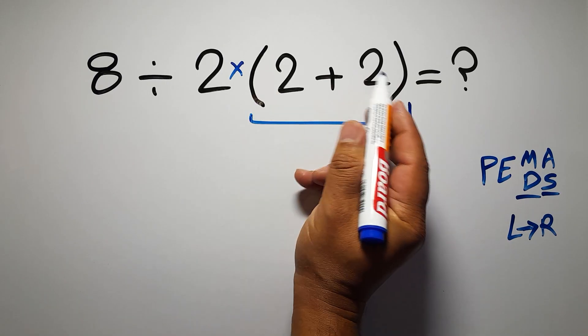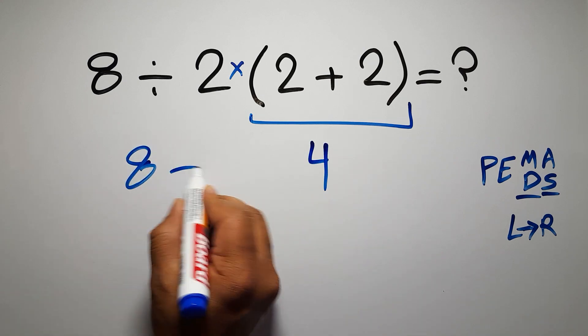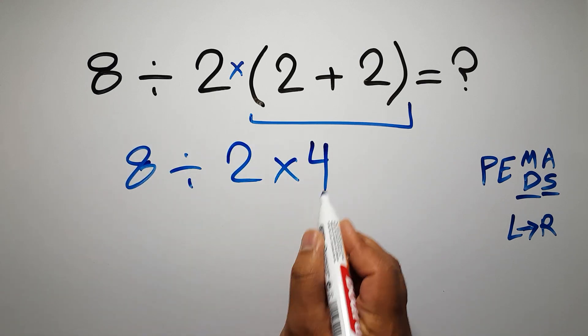So first, this parentheses: 2 plus 2 gives us 4, so 8 divided by 2 times 4.